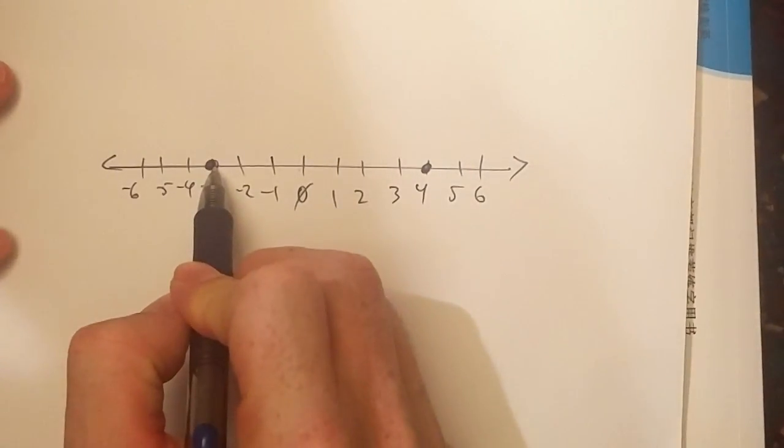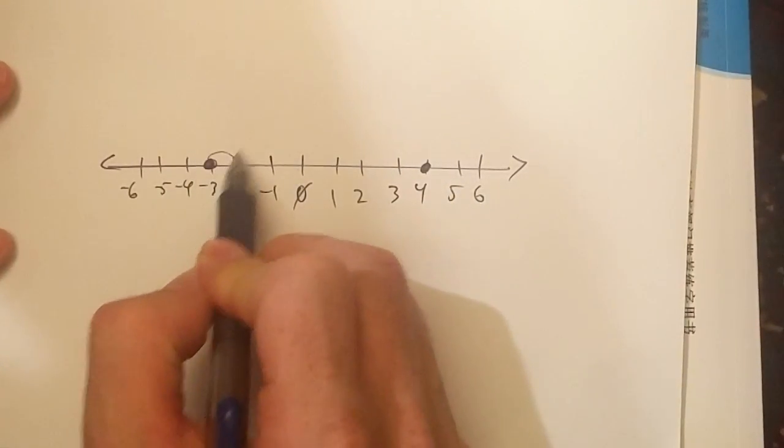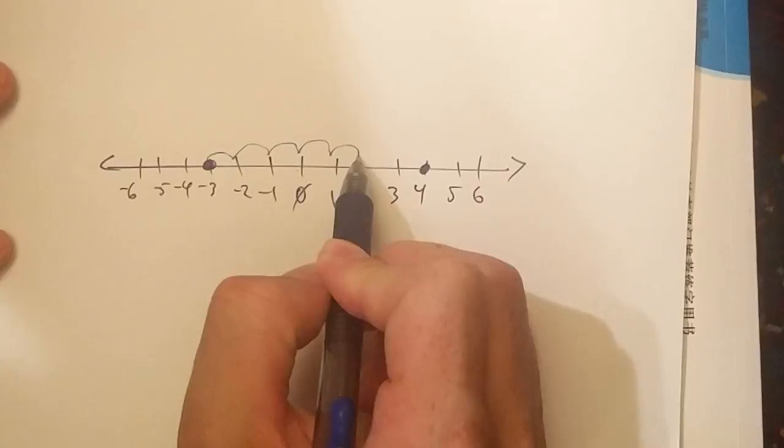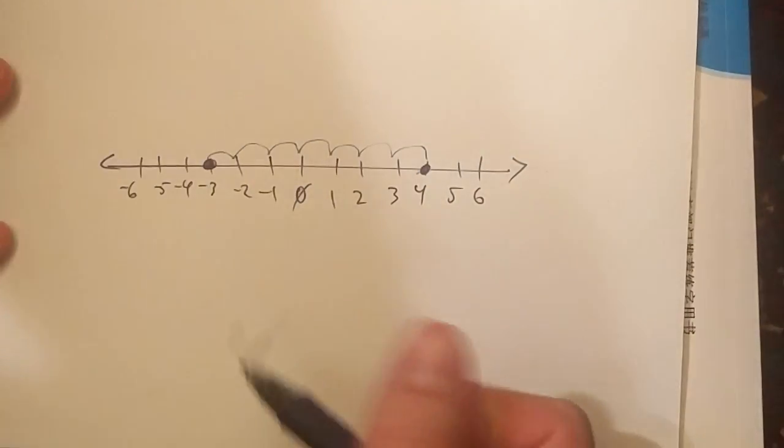I can start at negative three and I want to go all the way to four, so I just count: one, two, three, four, five, six, seven. So the distance between those two is seven.